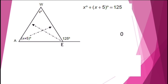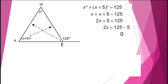Combining similar terms: 2X + 5 = 125. Transposing positive 5 to the right side gives 2X = 125 − 5 = 120. Applying the division property of equality and dividing both sides by 2, we get 2X ÷ 2 = X and 120 ÷ 2 = 60. So the value of X is 60.